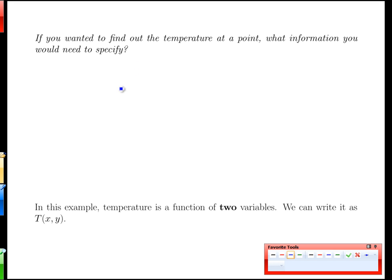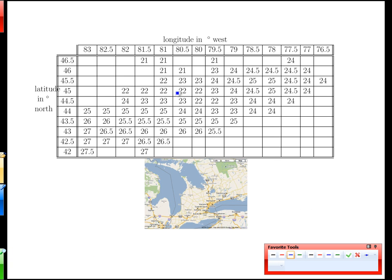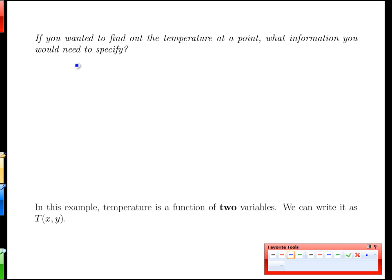When we get into defining our functions here, if we wanted to find the temperature at a point from that previous table, what information would we need to specify? If I wanted to know the temperature at this location, corresponding to roughly here on the map, what would I have to specify? It wouldn't be enough to specify just the longitude, because then I would have a choice of temperatures. It wouldn't be enough to specify the latitude, because again, I would have a choice of temperatures.